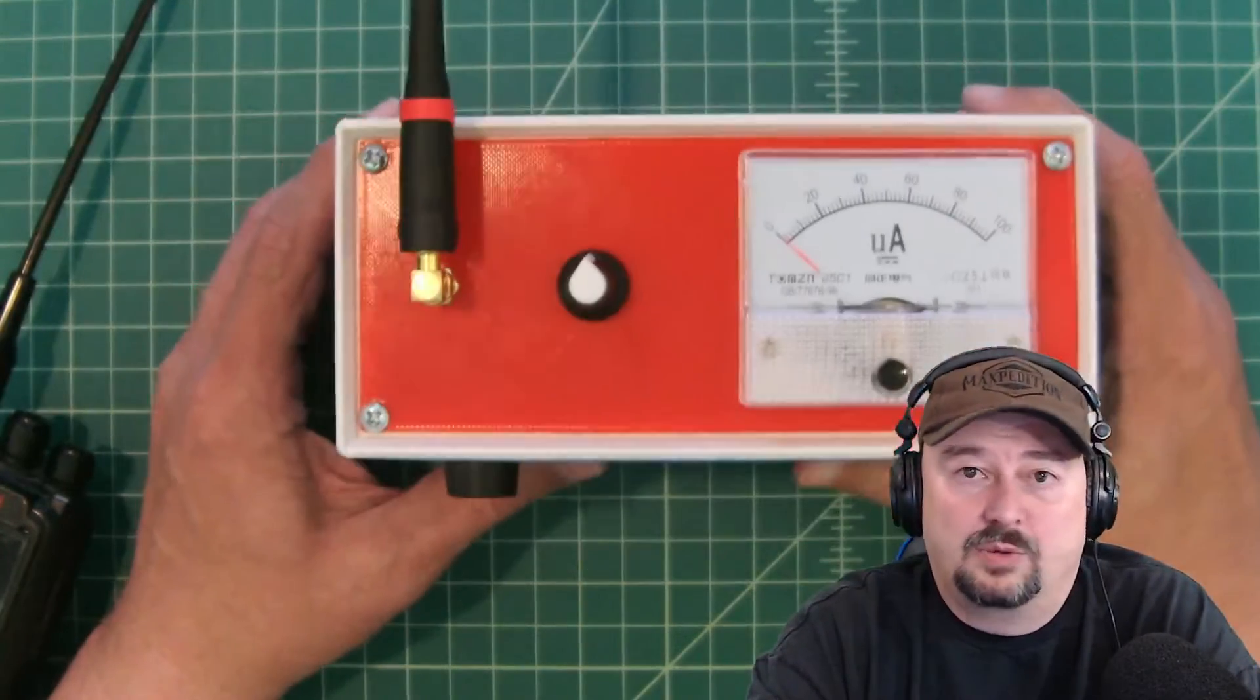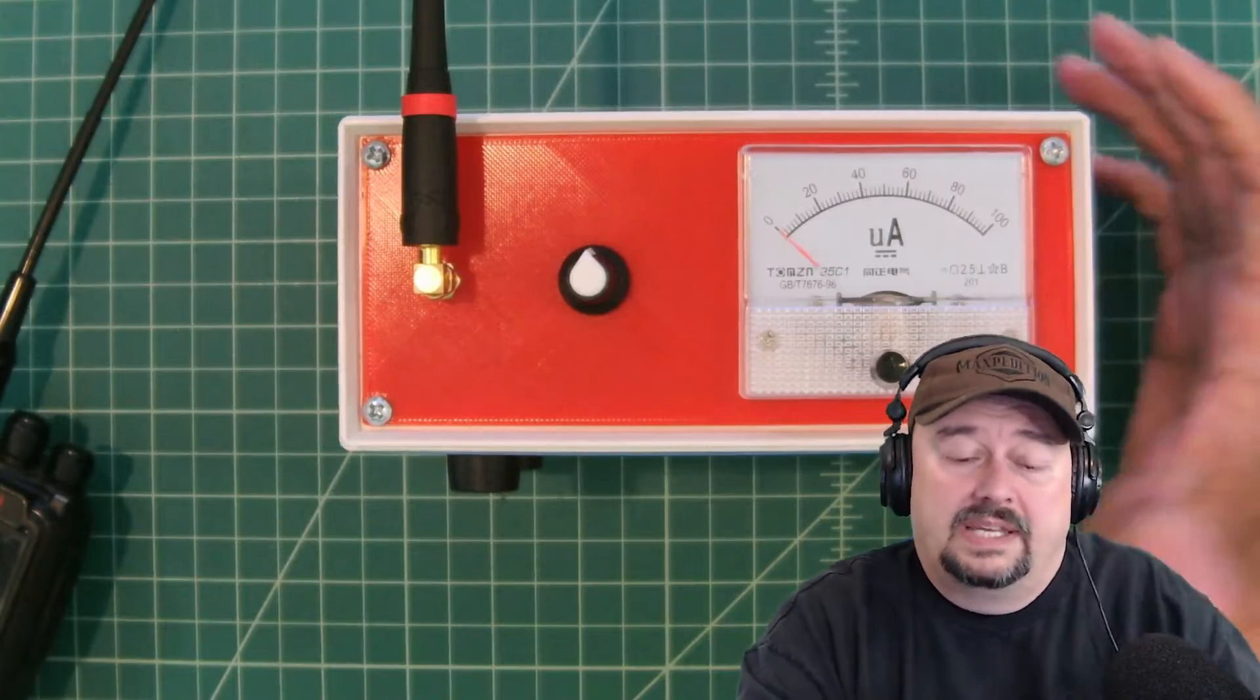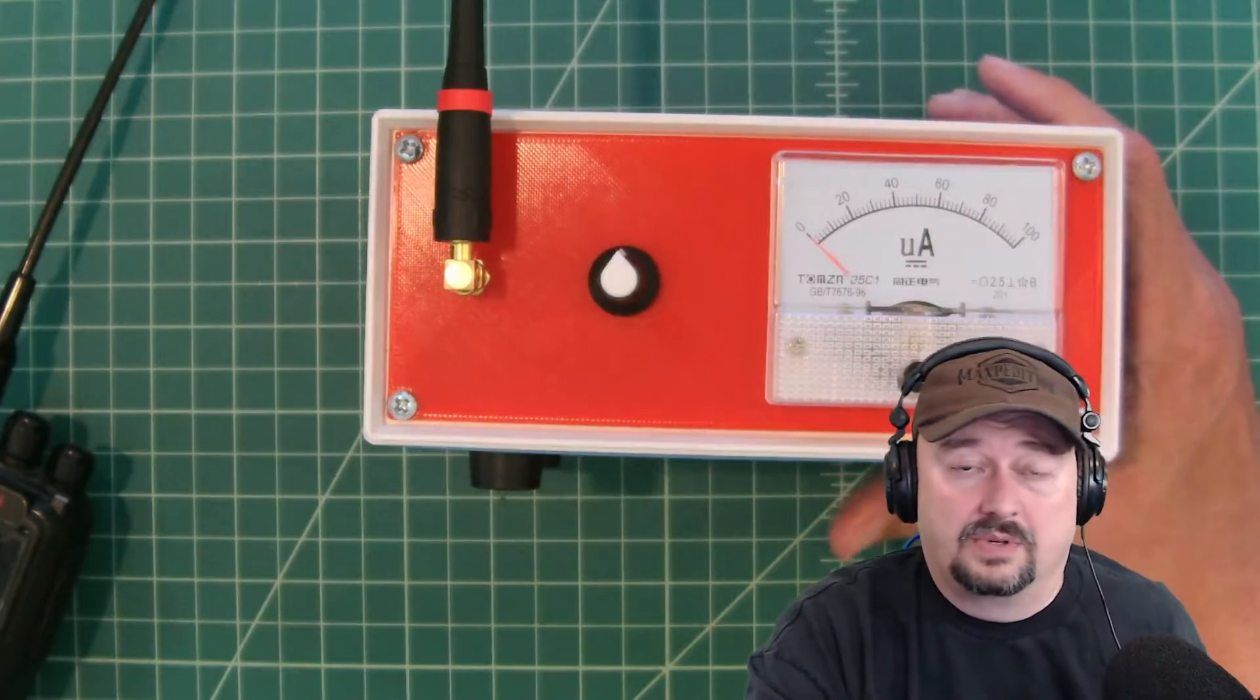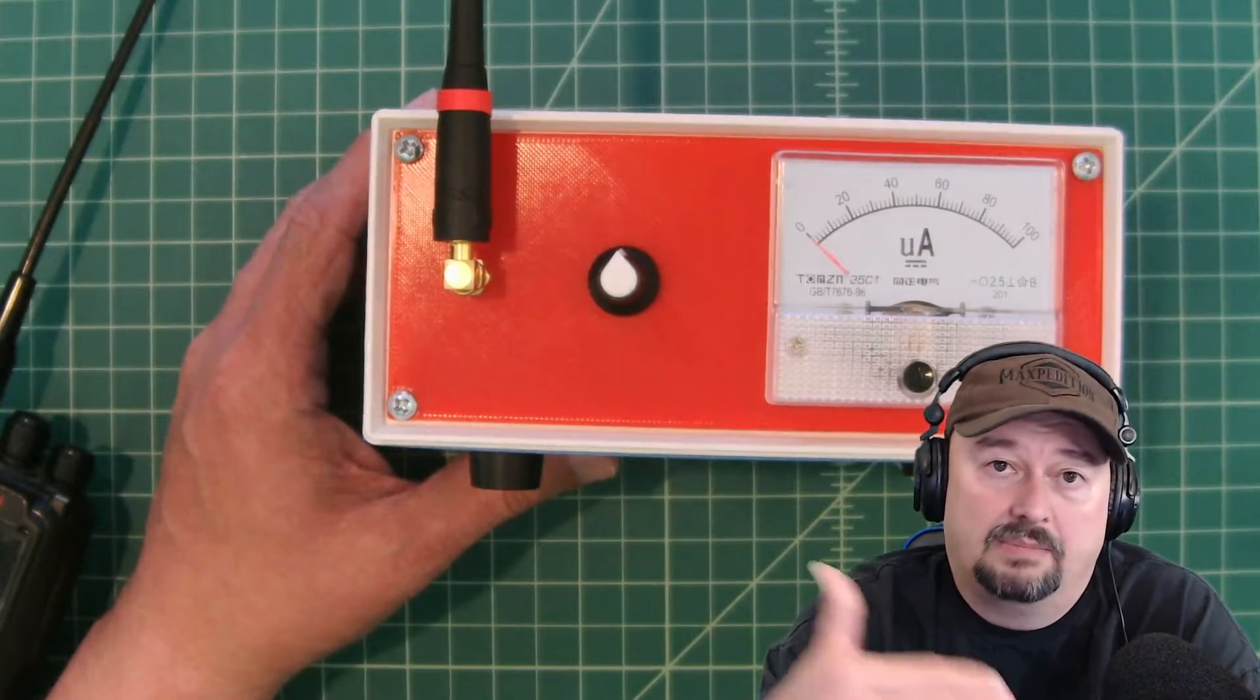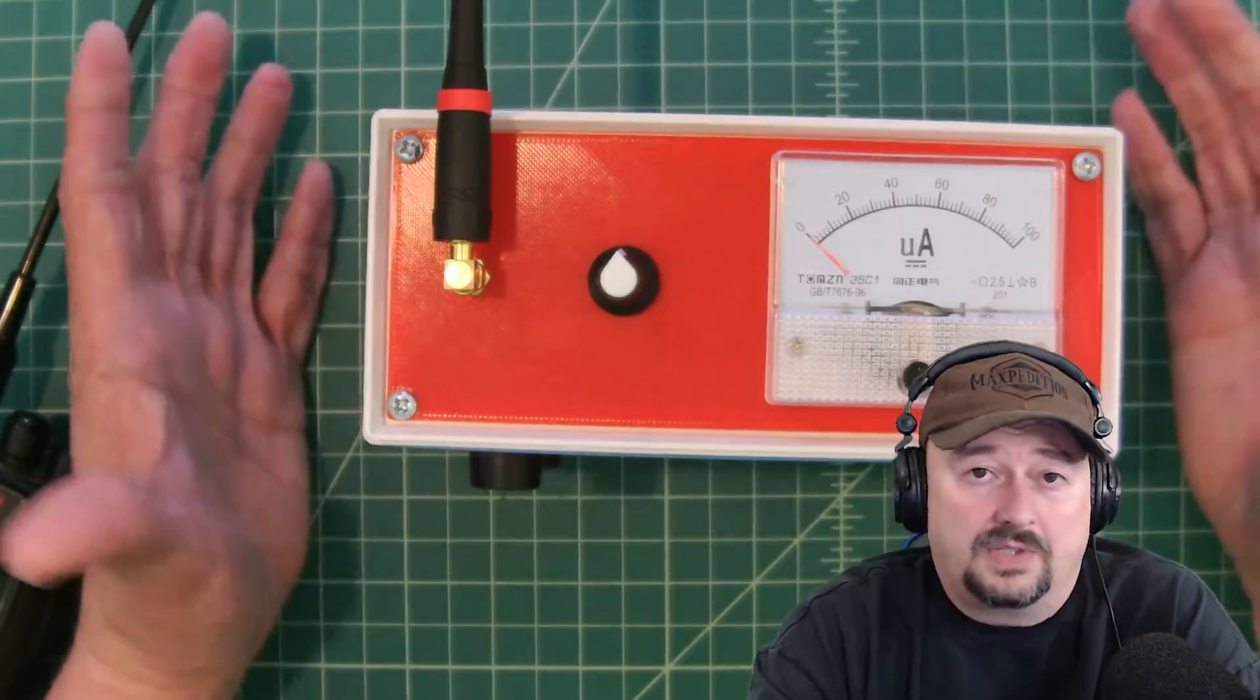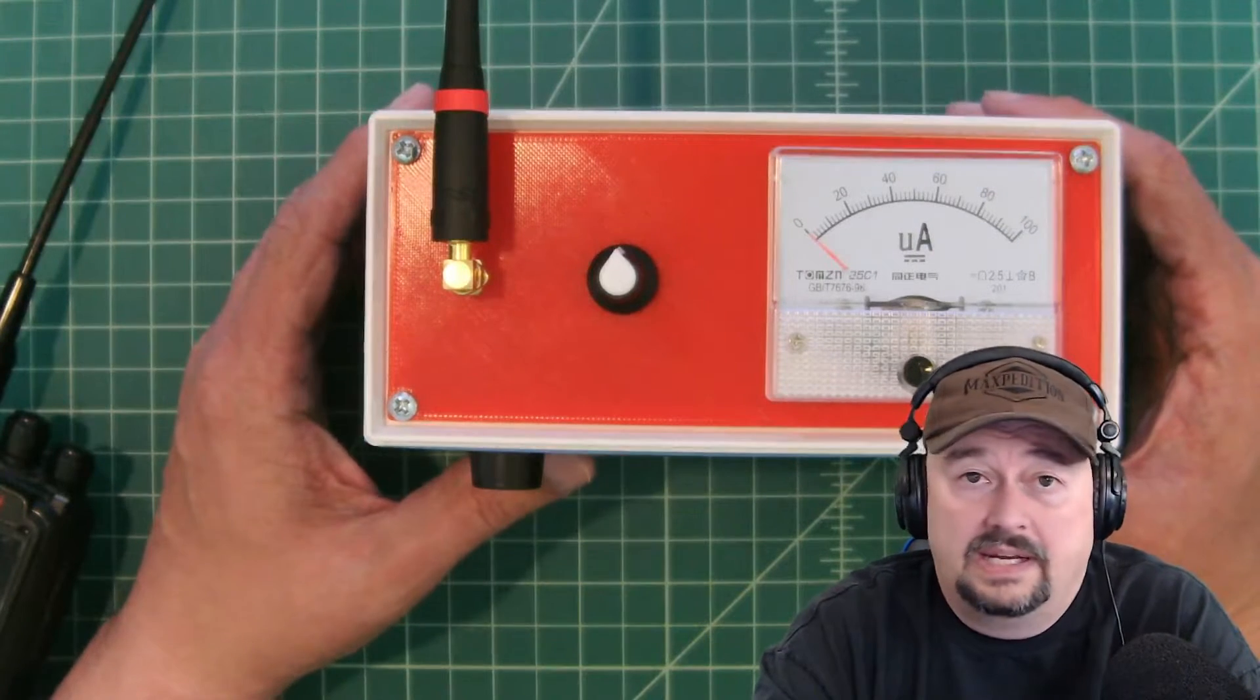Some applications for this would be if I have a directional antenna like a two meter Yagi, I can use this to see the gain I get off the front side versus the back side or the sides of that antenna. Also I could look at above the antenna, below the antenna, and get some ideas on my far field plot and what that would look like.